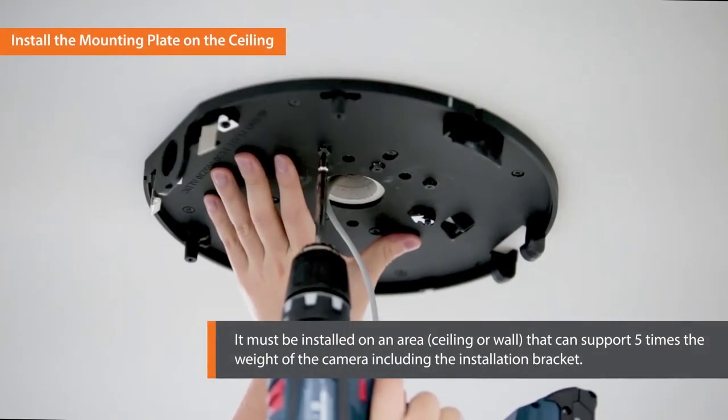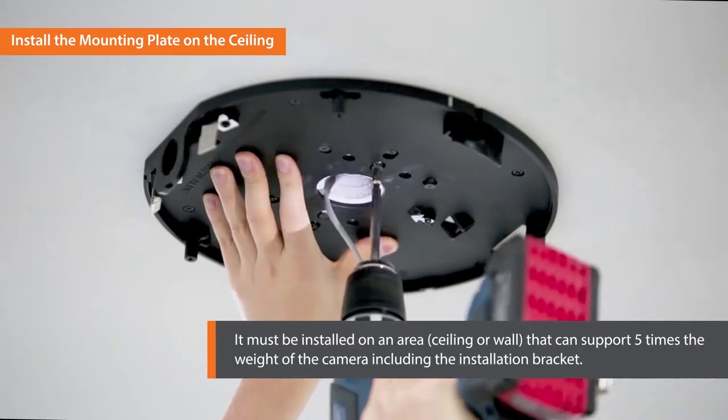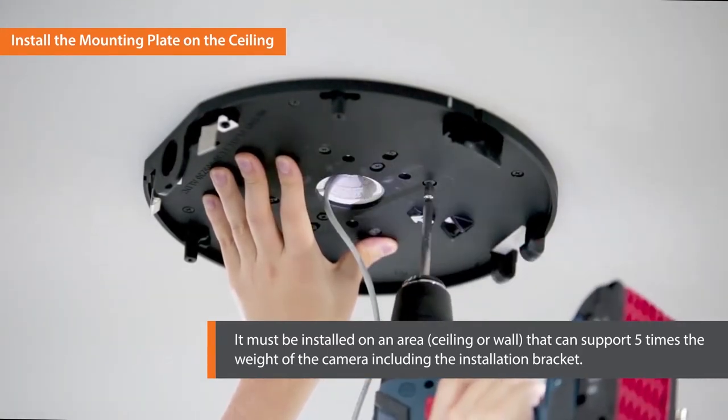Now it's time to install the mounting plate on the ceiling. It must be installed on an area that can support five times the weight of the camera, including the installation bracket.